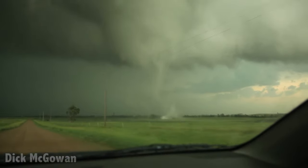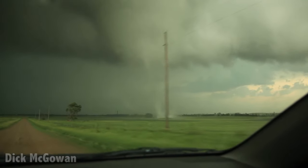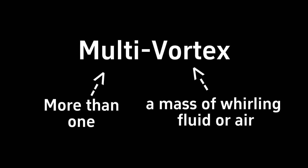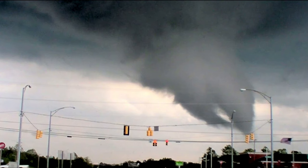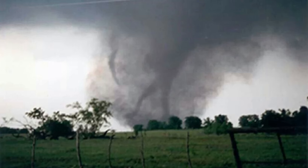Multivortex tornadoes are usually the most dangerous and devastating types of tornadoes. As the name suggests, multivortex tornadoes are tornadoes with multiple vortices. These subvortices can revolve around, inside, and as part of the main vortex. Joplin, El Reno, and Jarrell are some notable examples of multivortex tornadoes.